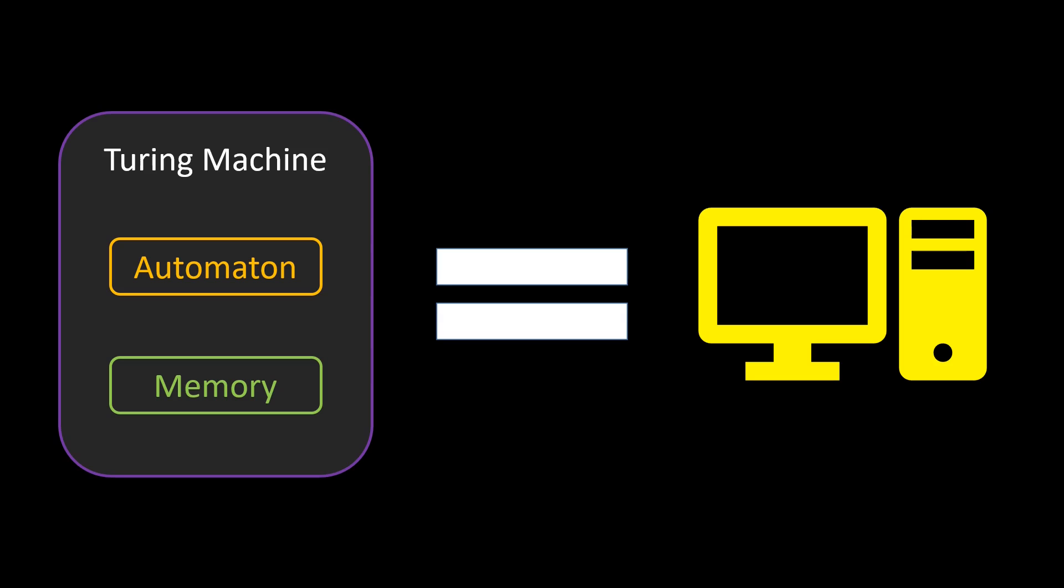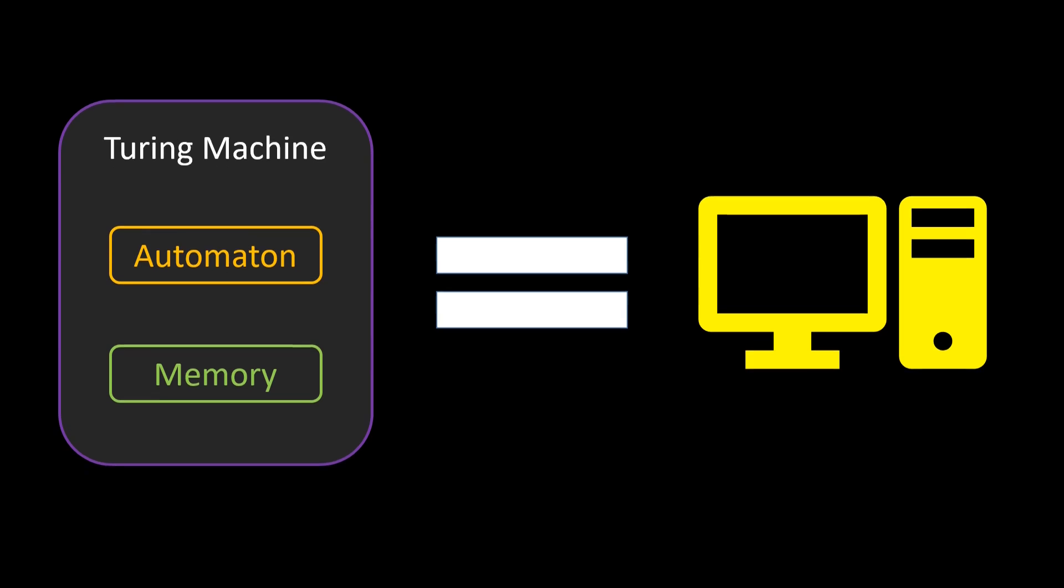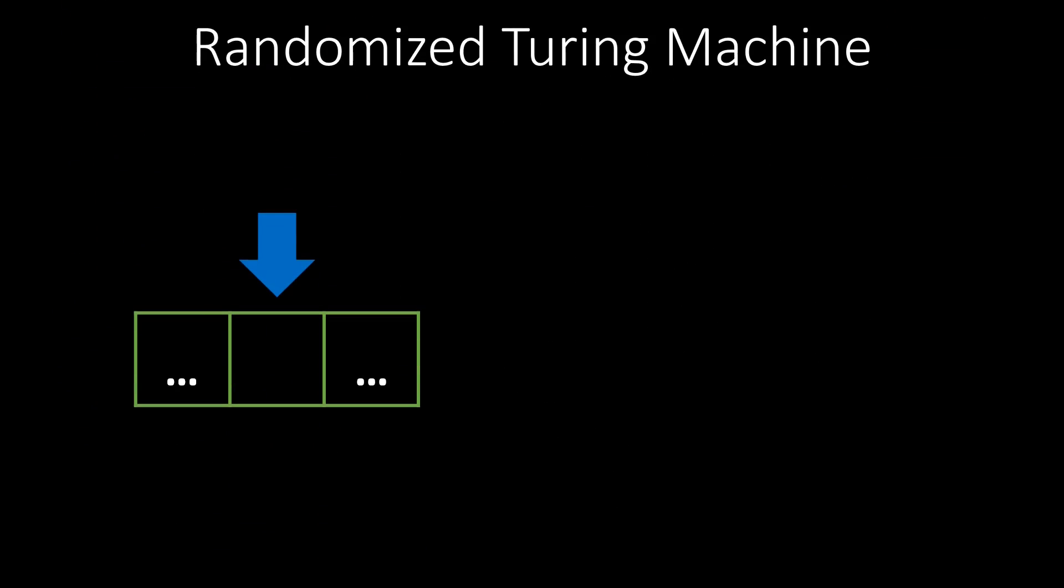However, randomization is one crucial concept in computation that this basic machine model cannot capture. To model that, we need to extend the machine model slightly. In a randomized Turing machine, we could have some states where we move left or right randomly, by flipping a coin.